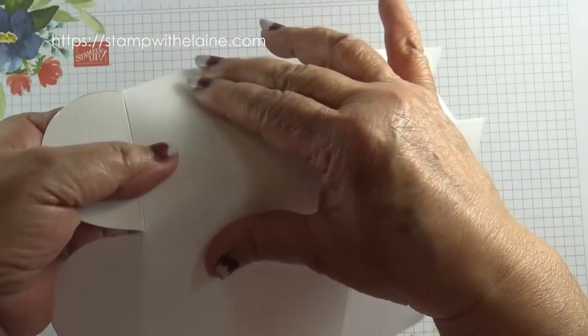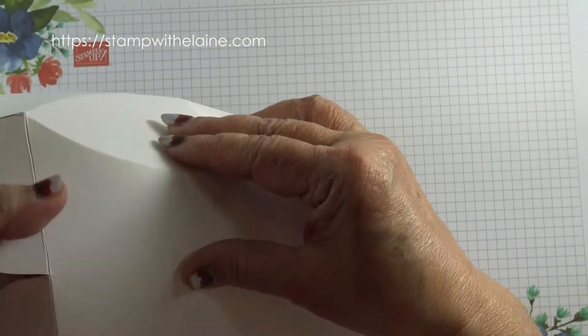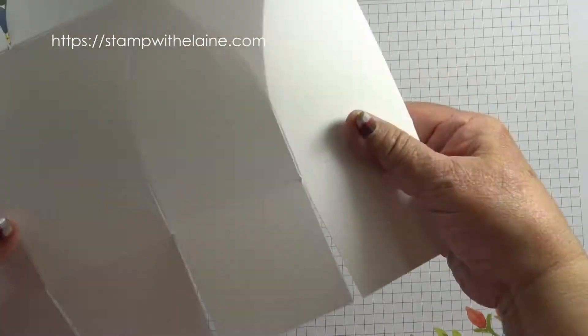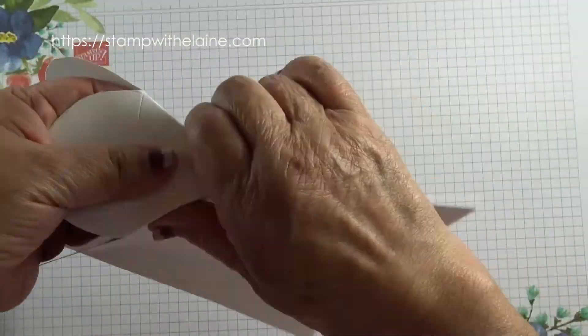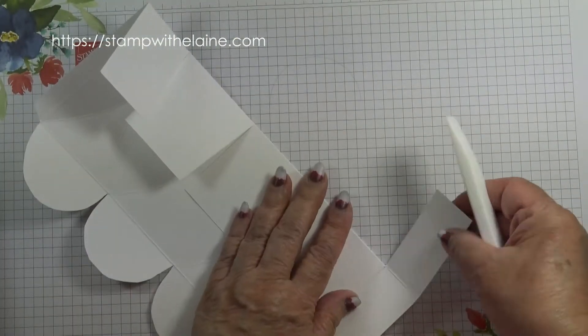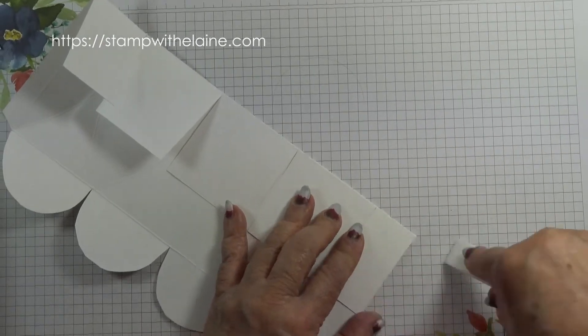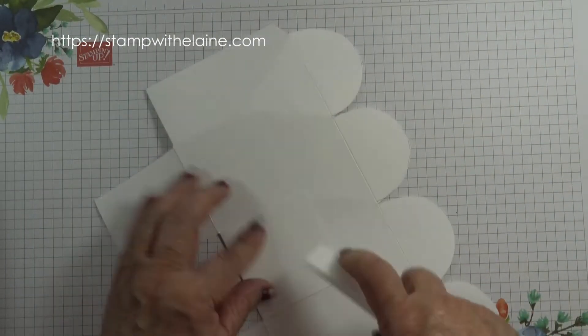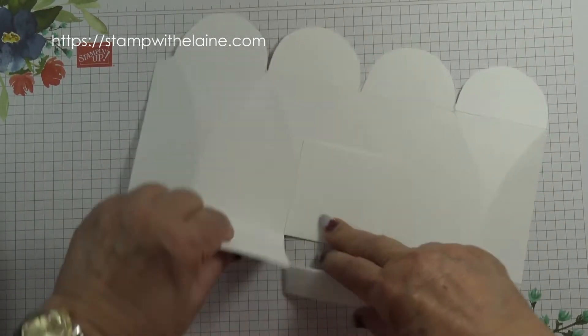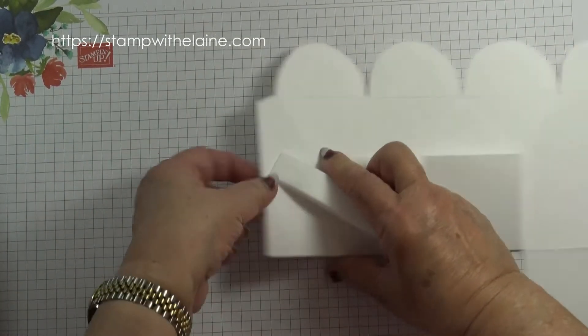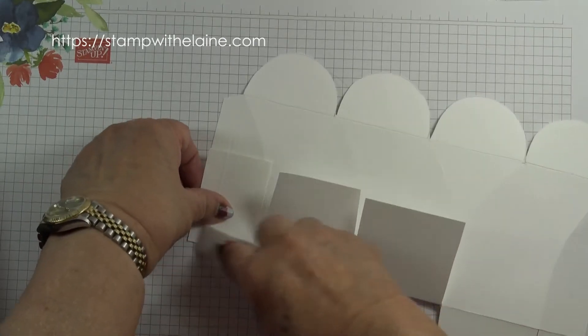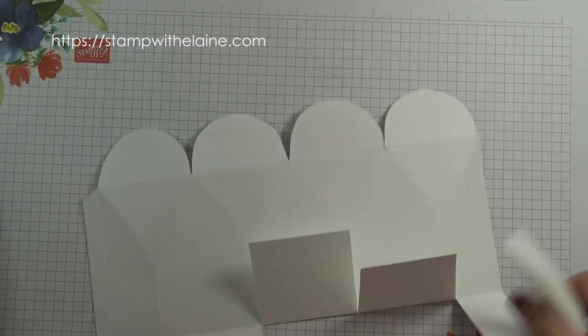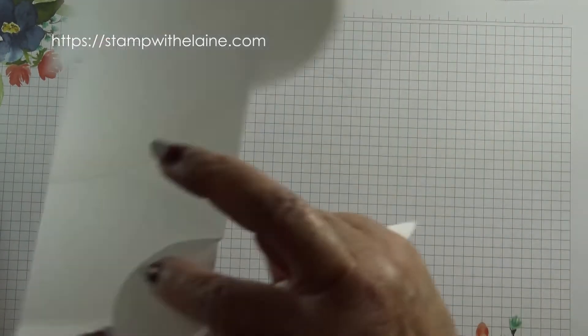So now we're ready to reinforce the score lines. So just pinch it. It's pretty easy to come together. And just try the paper. Crease that. In both directions so that it will fold better.